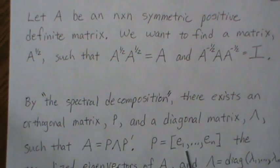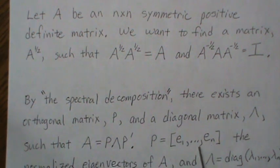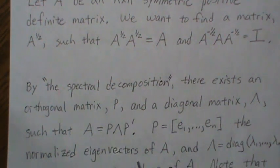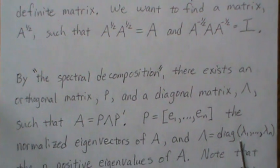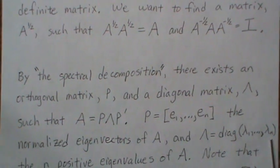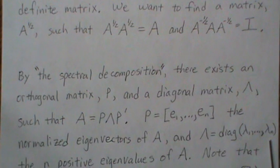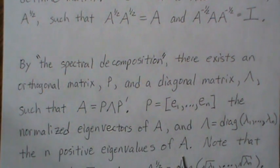Now P is an n-by-n matrix, and these e_i's are the normalized eigenvectors of A. And lambda is a diagonal matrix that contains lambda one through lambda n, which are the n positive eigenvalues of A.